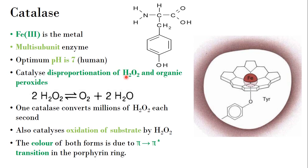Disproportionation means a compound is both reduced and oxidized during the process of forming products. In this case, hydrogen peroxide is both reduced and oxidized during the formation of oxygen and water. We need to disproportionate hydrogen peroxide because it is very harmful to our tissues and cells. Two molecules of hydrogen peroxide are involved in this process.